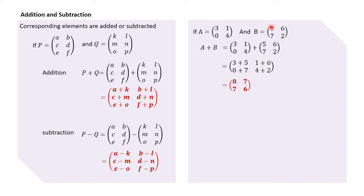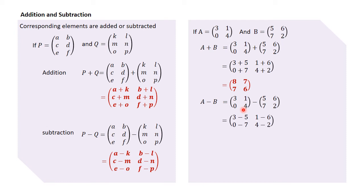The position of 3 and 5 are the same in matrices A and B; same way the position of 1 and 6 correspond in the two matrices, and 0 and 7, 4 and 2 likewise. Now if we want to do A minus B, we subtract corresponding elements: 3 minus 5, 1 minus 6, 0 minus 7, and 4 minus 2, which gives us the matrix [−2, −5, −7, 2]. That is the resulting matrix.